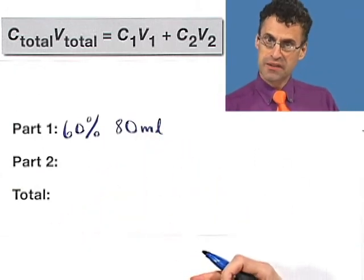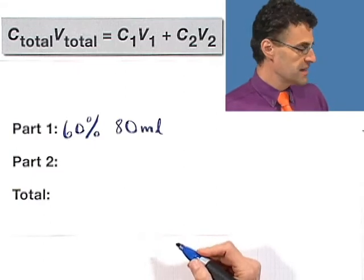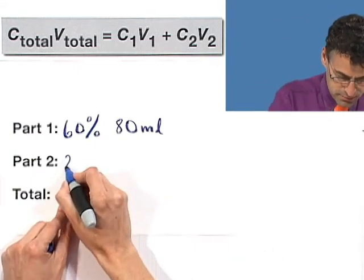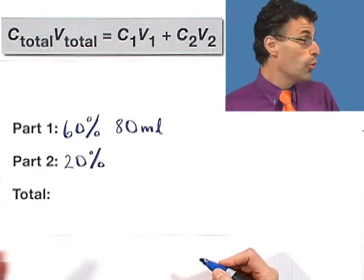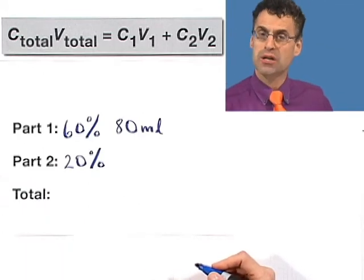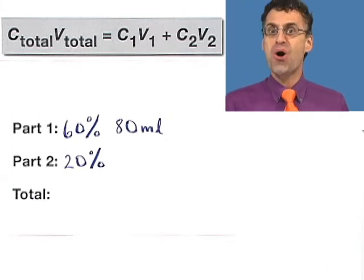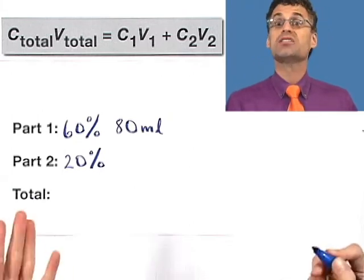The second part, the stuff that we're going to add in, well, let's see. That's the 20% solution. And how many milliliters do we have to add? Well, that's exactly the question. That's the unknown quantity. Let's call it x.